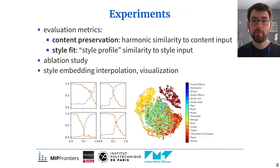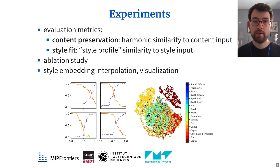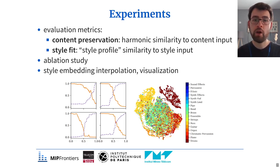We evaluate the performance of our method using some existing and some newly proposed objective metrics. First, to measure how well the output retains the correct harmonic structure, we compute a measure of harmonic similarity to the content input. Second, to quantify how well the output fits the target style, we define measures of style similarity based on a set of so-called style profiles, which capture statistics of musical events. We also conduct an ablation study and explore our learned style embedding space by means of interpolation and visualization.